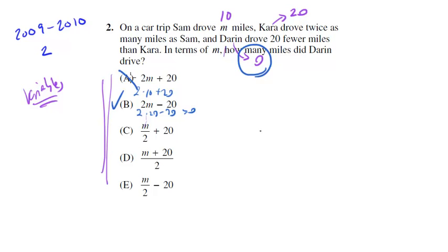Now for the plugging in, you always want to test all 5. So don't just stop at B, because you might see that more than one will work. And if that's the case, you just got to plug in another number and eliminate from there. 10 divided by 2 plus 20? No. 10 plus 20 divided by 2? No. 10 divided by 2 minus 20? No. None of those equals 0. So the only answer here is B.